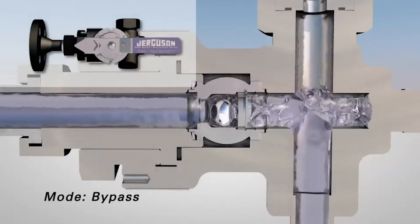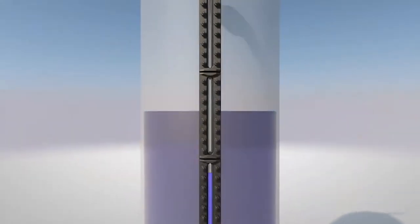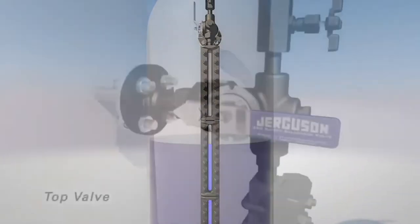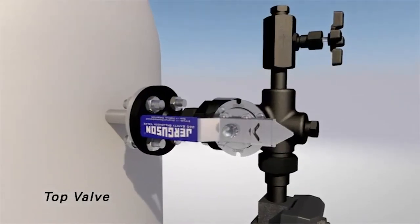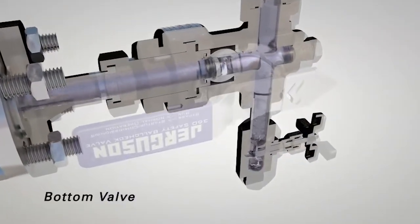Fluid will now flow through the valve and into the glass gauge without seating the ball check. Once the level stops rising, move the top valve to the run position, then the bottom valve. The valve is now ready for normal operation.